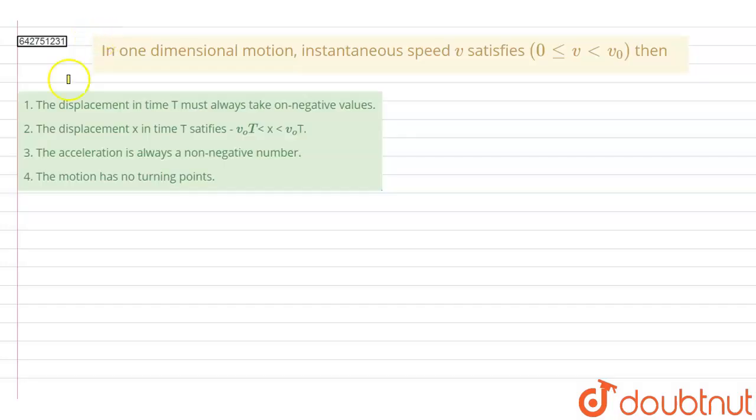Hello everyone. So in this question we have one in one-dimensional motion instantaneous speed v satisfies v between 0 and v0. Then these are the four options.